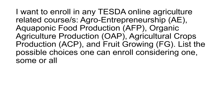The problem states: I want to enroll in any TESDA online agriculture-related course or courses. The available courses are: Agriculture Entrepreneurship, Aquaponic Food Production, Organic Agriculture Production, Agricultural Crops Production, and Fruit Growing. You are tasked to list the possible choices you can enroll in — considering one, some (two, three, four), or all.